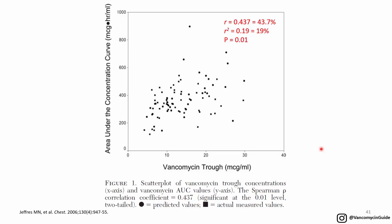Now let's look at the correlation between trough and AUC. The 2009 and 2011 guidelines said you can use trough as a surrogate for AUC because AUC is the PKPD target for efficacy—AUC actually determines efficacy. Trough really doesn't mean anything for efficacy; trough is only meaningful for safety. So what those guidelines said was that they were using trough as a surrogate for AUC, the actual parameter for efficacy, because there is a significant correlation between trough and AUC.